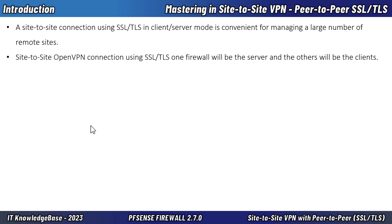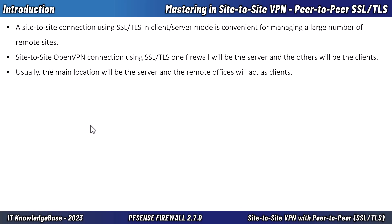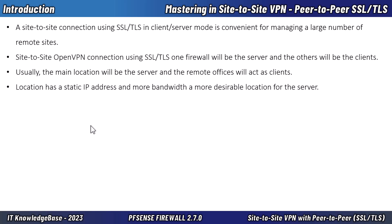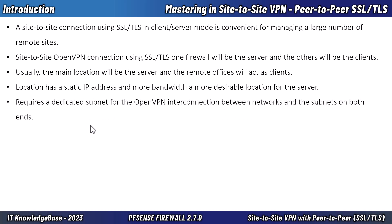When configuring a site-to-site VPN connection using SSL/TLS, one firewall will be the server and the other will be the client. Usually the main location will be the server and the remote offices will act as clients. If one location has a static IP address and more bandwidth, that may be a more desirable location for the server. This style of VPN requires a dedicated subnet for the OpenVPN interconnection between networks.